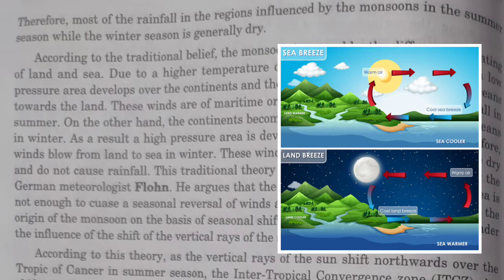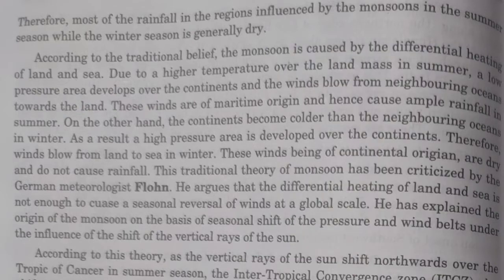The only difference is that land breeze and sea breeze occur on a very small scale, covering a small area, whereas monsoon occurs over a large area on a larger scale. It is caused due to the differential heating of land and sea.